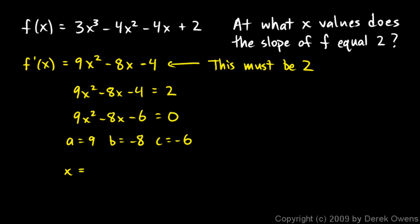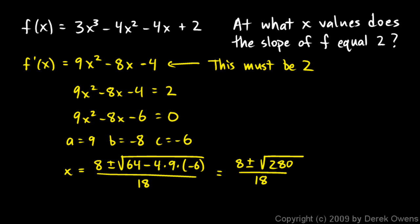x is going to be negative b, which is a positive 8, plus or minus the square root of b squared, which is 64, minus 4 times a times c. And all of that over 2a, which is 18. And that works out to 8 plus or minus the square root of 280. All of this stuff under the radical here works out to 280. And that's over 18.